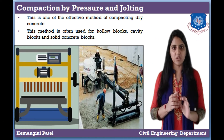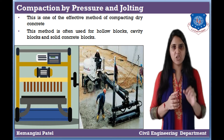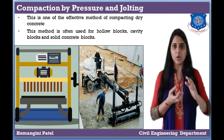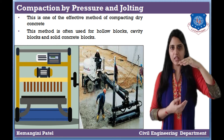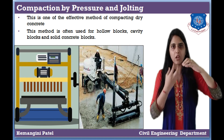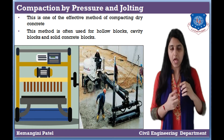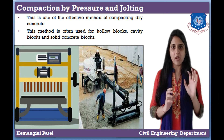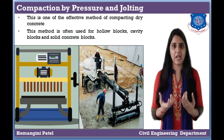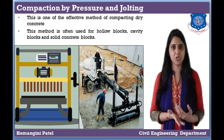The next method is compaction by pressure and jolting. In this process, we give pressure from the upper side and give vibrations from the bottom, which means the concrete undergoes a jolting action. This type is generally used to compact dry concrete, using hollow blocks and cavity blocks.